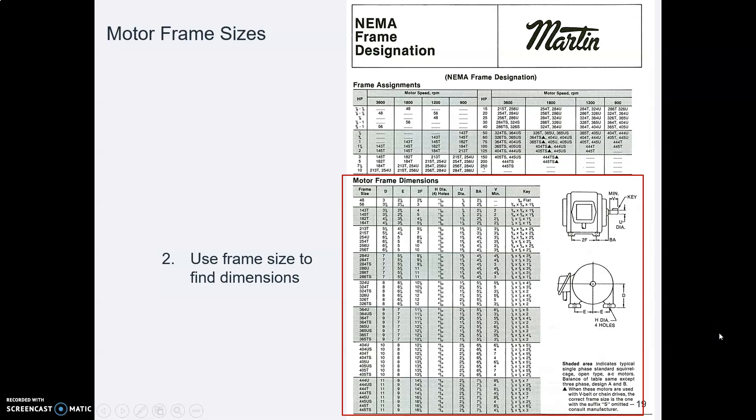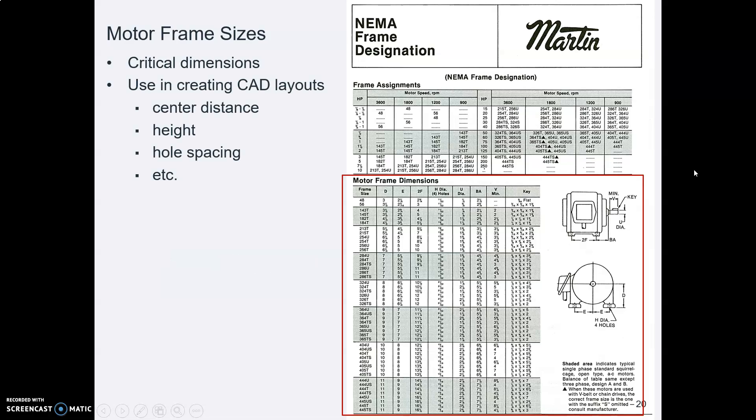Once you find what the frame size is, then you use the frame size to look up the dimensions. That's the way this system works. And you use those dimensions for things like making your motor mount with the bolt holes the right spacing, figuring out what height the motor is so you know where to put your sheaves and belt guards, looking up the shaft diameter, and so on and so forth.